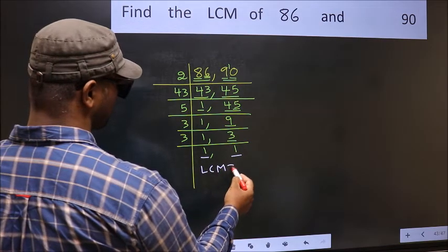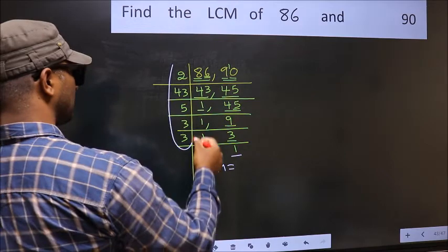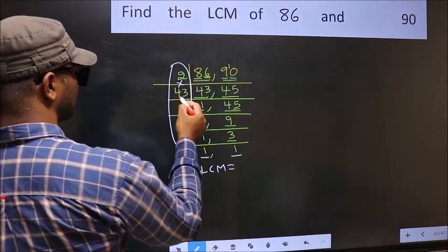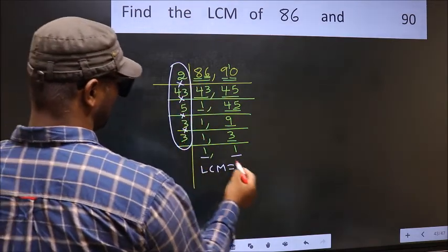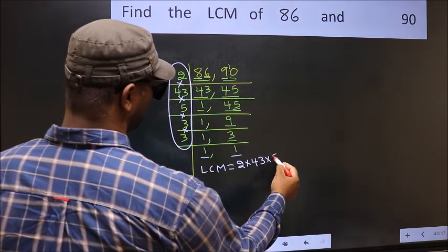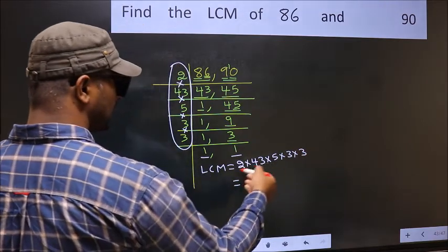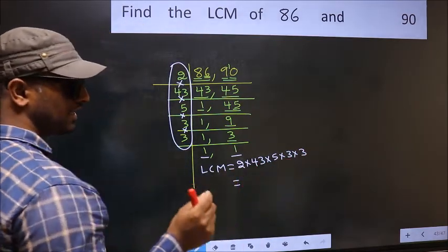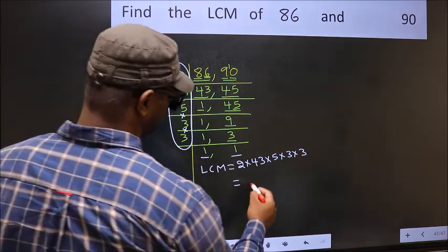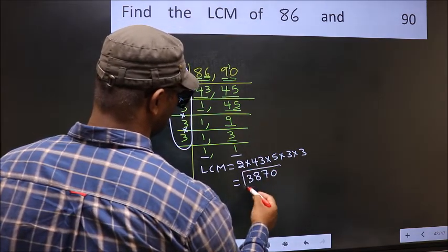So our LCM is the product of these numbers: 2 times 43 times 5 times 3 times 3. When we multiply these numbers, we get 3870 is our LCM.